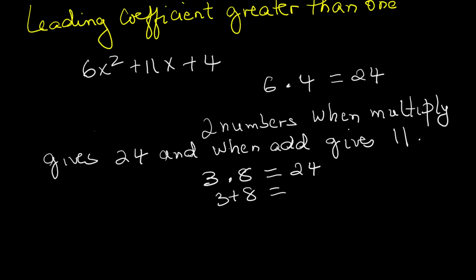Next, split the middle term into those two numbers. 6x squared plus 3x plus 8x plus 4. Now group them. 6x squared plus 3x and 8x plus 4.